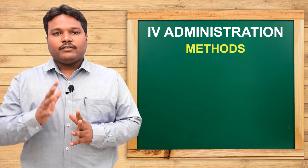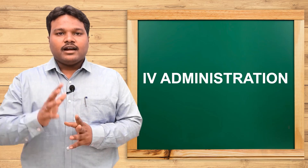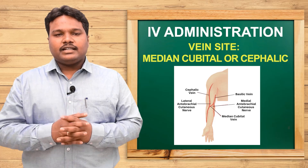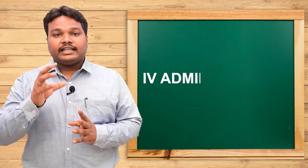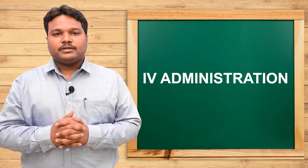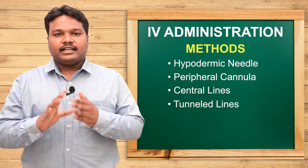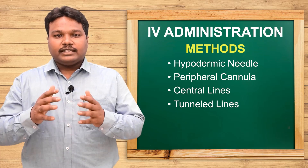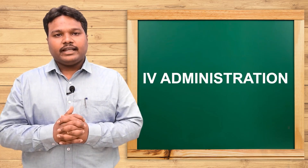Today we have seen one important method of drug administration — the method of IV administration. We covered the introduction, definition, purpose, and sites of IV administration, including the median cubital area or wherever the patient has a dominant bulging vein. We also reviewed different color codings and gauges used for cannulas, and the different methods: hypodermic needles, peripheral cannulas, central lines, and tunneled lines. Tunneled lines work like a pipeline, allowing delivery of large quantities of fluid. I hope you understood the topic. Take care, be safe, thank you.